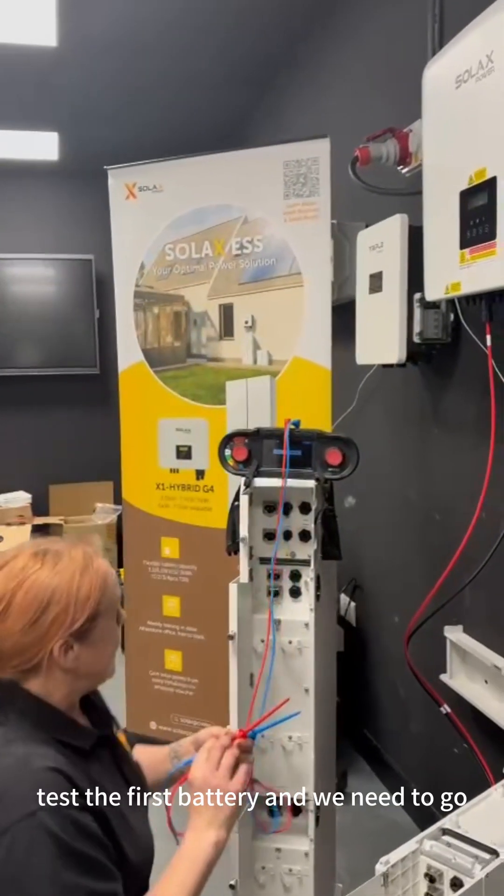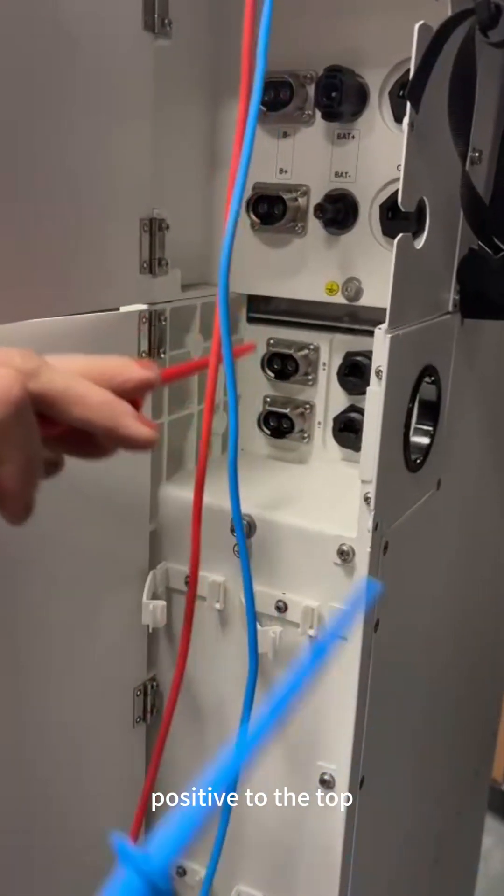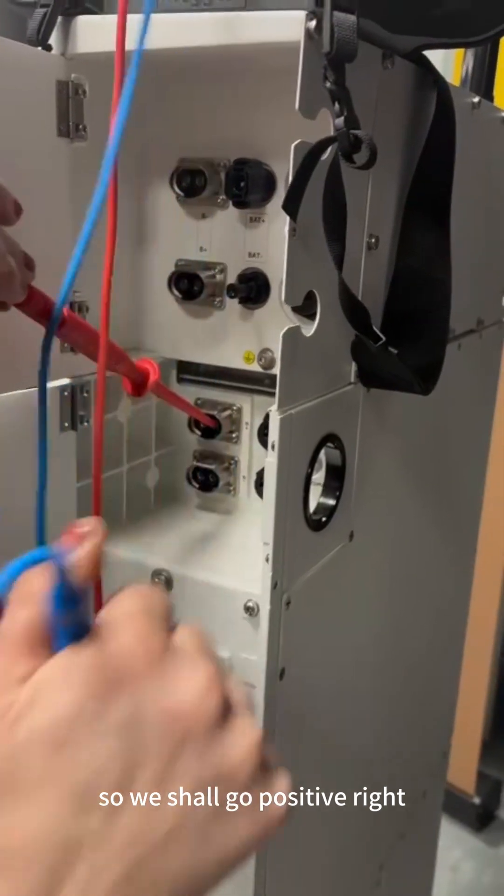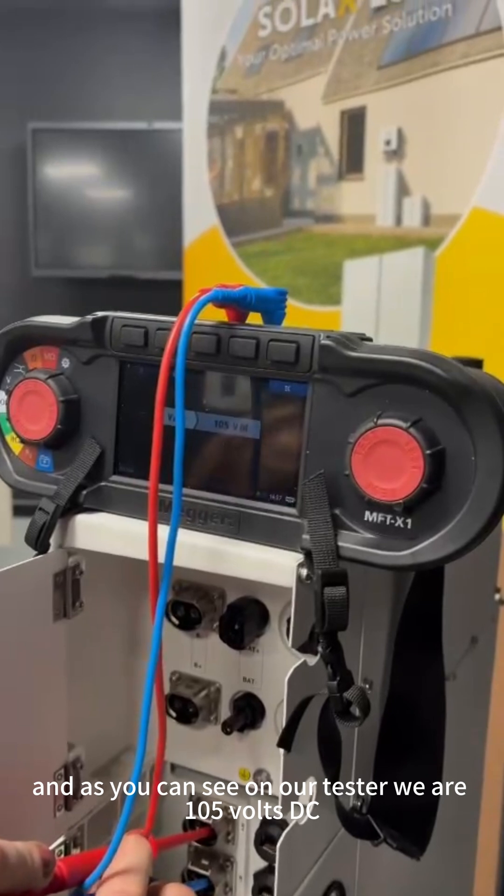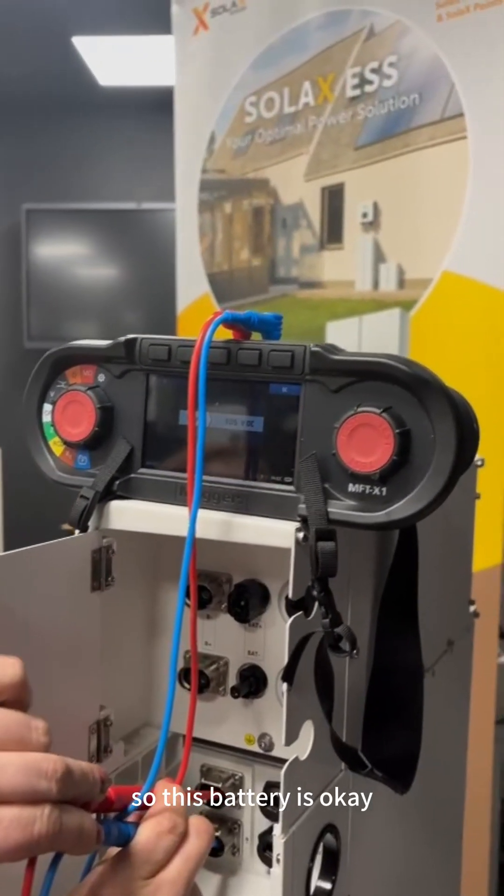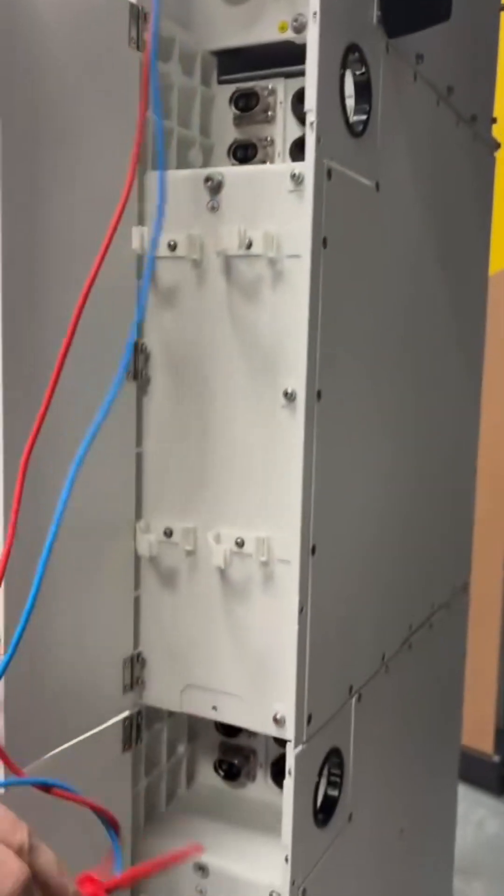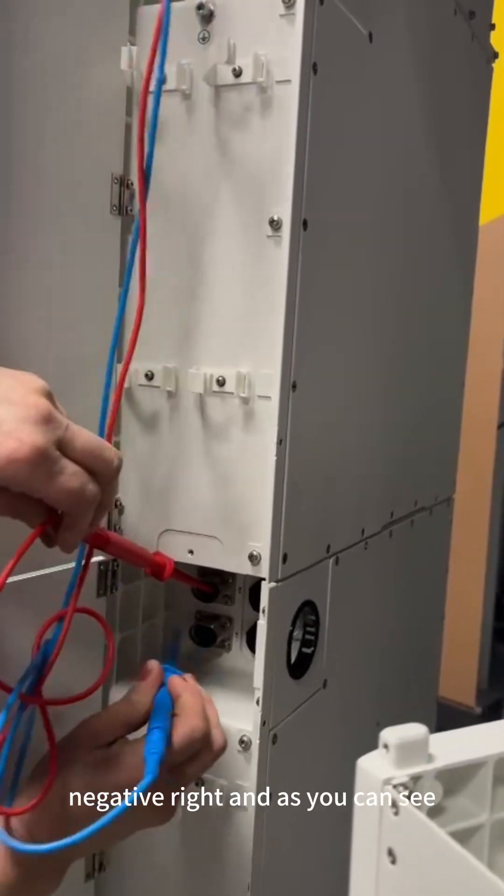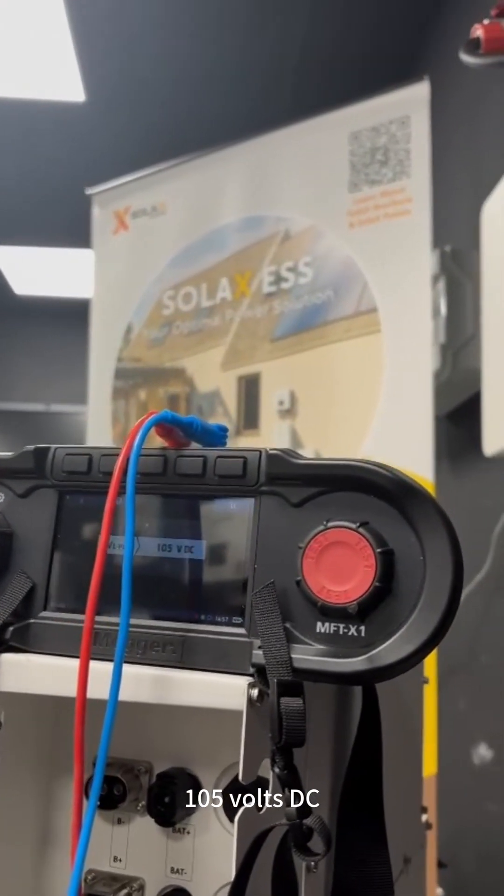We're going to test the first battery and we need to go positive to the top, negative to the bottom on the right hand side. So we shall go positive right, negative right. And as you can see on our tester, we are 105 volts DC. So this battery is OK. We'll test the next battery. Positive right, negative right. 105 volts DC.